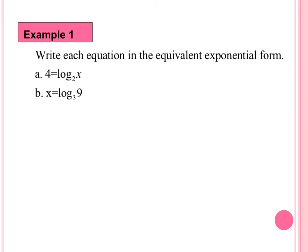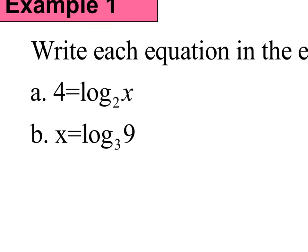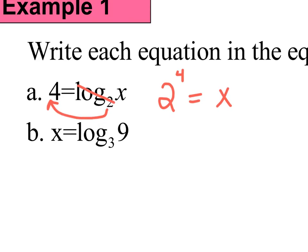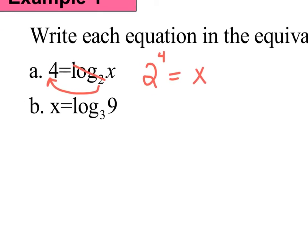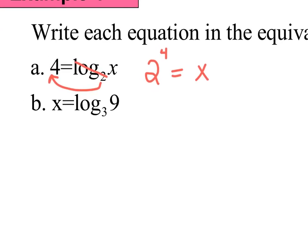In this first example, we are just writing the equation that is in log form into exponential form. So 2 comes over, picks up the 4, drops off, equals X. It doesn't say to solve them yet, so we're literally just rewriting them in the other form. Part B: X equals log base 3 of 9 — 3 comes over, picks up the X, drops off, leaving the 9.